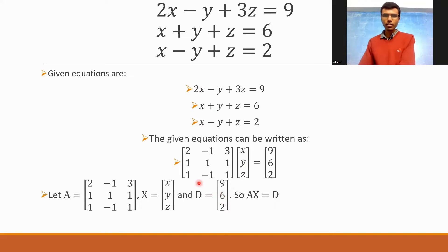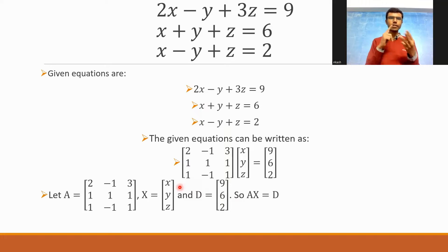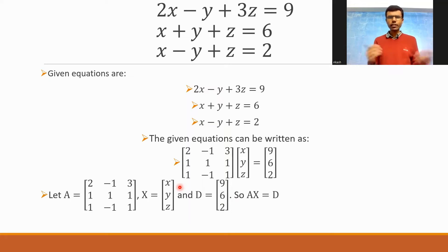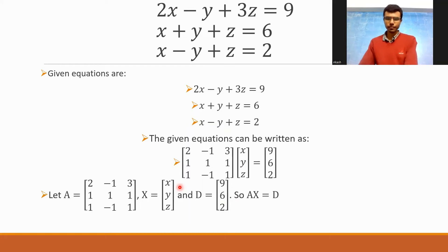Now there will be 4 parts which I need to find out: first is delta, delta 1, delta 2, and delta 3. And then x, y, z you can find out very easily at the end. Now how to do that? Stay with me.